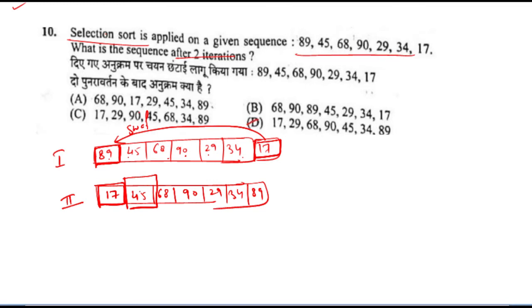In the second iteration, the second position will be compared with each element, and where the smallest element is found, it will be swapped. Here the smallest element is 29, so the new sequence will be made.